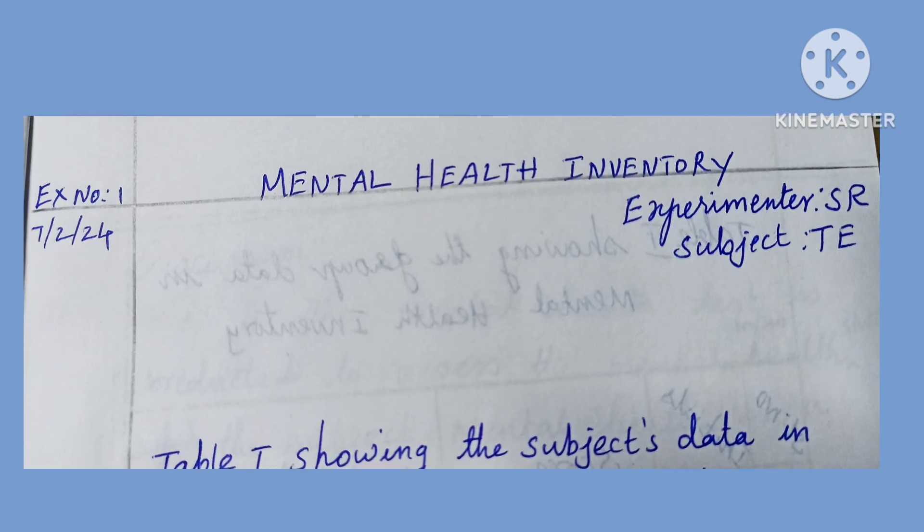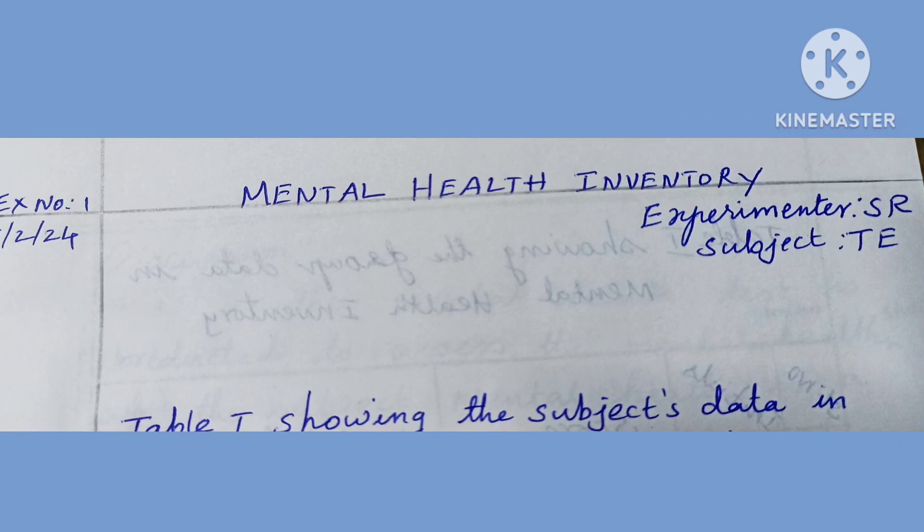We should write 'Exercise Number One' and below that write the date. On the right side we should write the experimental initials and subject. A sheet is given for answering each question. We have to select either yes or no.